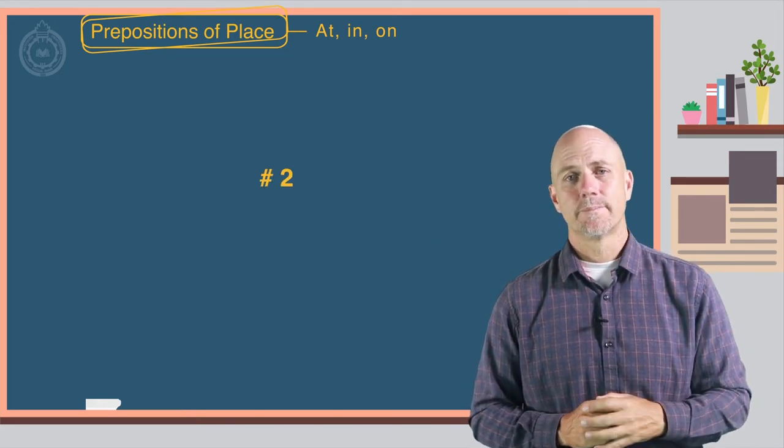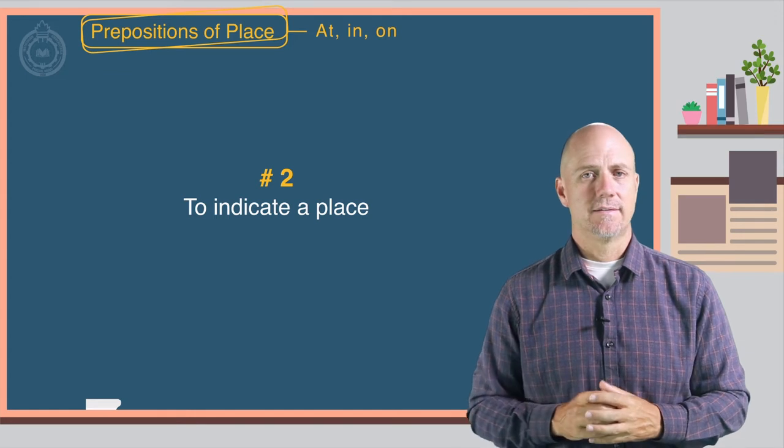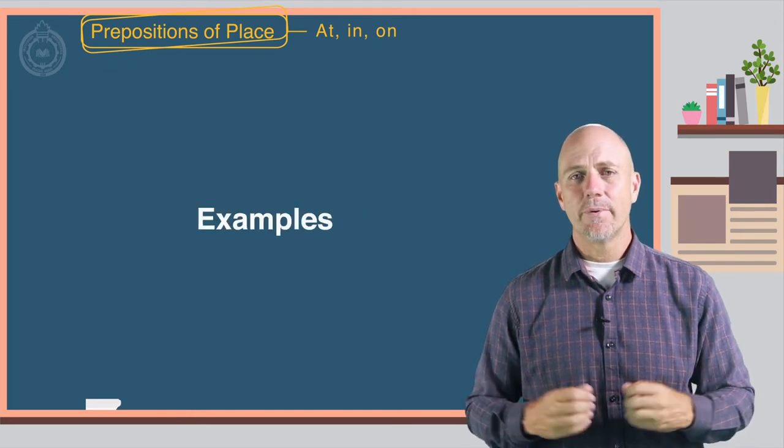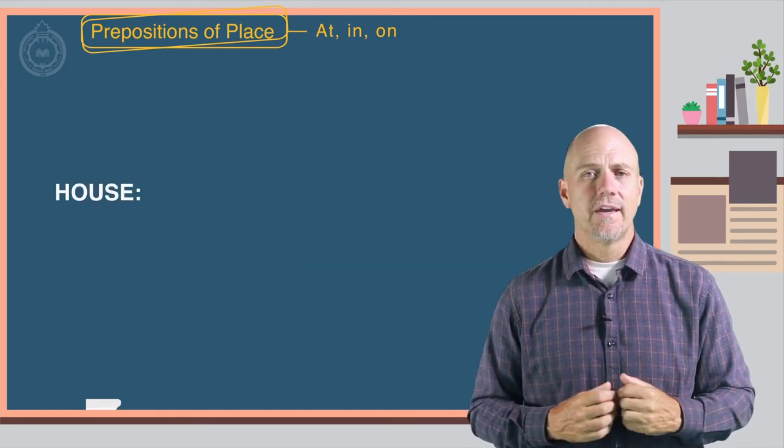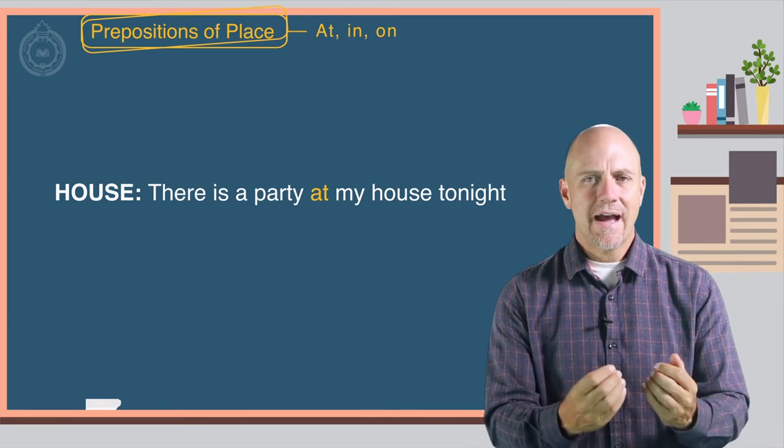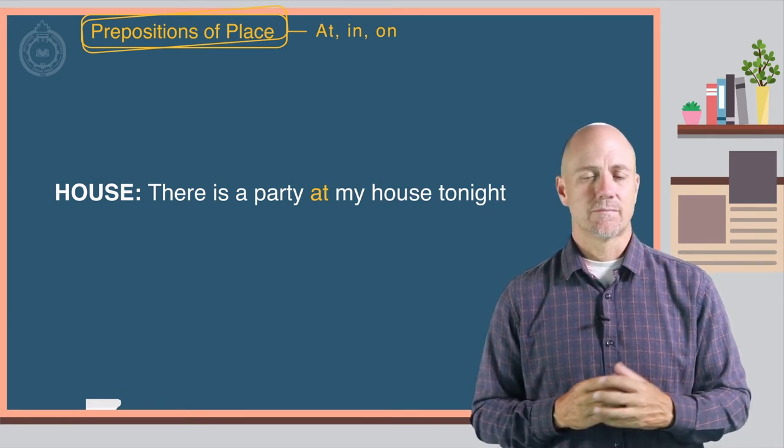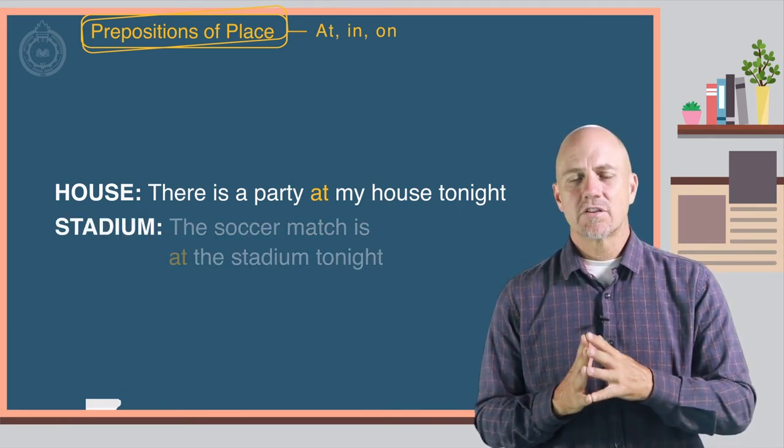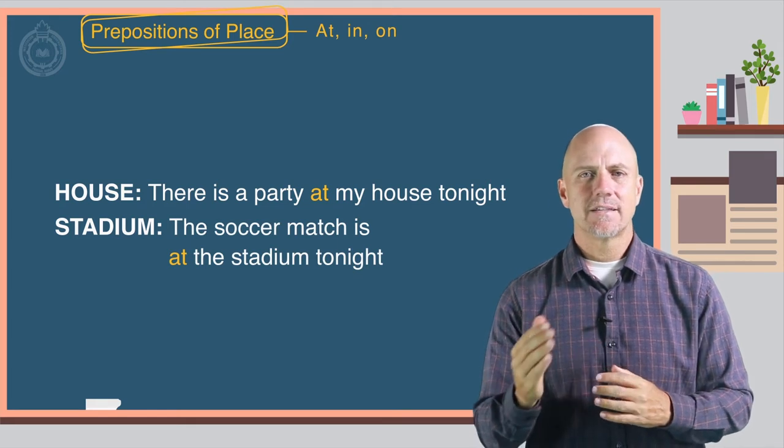Number two, to indicate a place. Here are some examples. A house: There is a party at my house tonight. A stadium: The soccer match is at the stadium tonight.